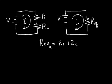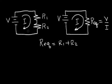Let's see if we can prove this by using Ohm's Law. We know that the equivalent resistance by Ohm's Law is voltage divided by the current — the voltage across the resistor divided by the current through the resistor.